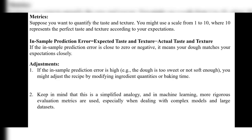What are the metrics here we are using? Suppose you want to quantify the taste and texture — you might use a scale from 1 to 10, where 10 represents a perfect taste and texture according to your expectations. The formula for in-sample prediction error is: expected taste and texture minus actual taste and texture. If the in-sample prediction error is close to 0 or negative, it means your dough matches your expectations closely.